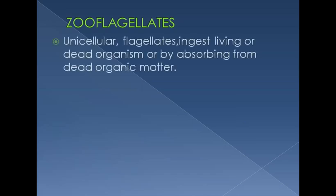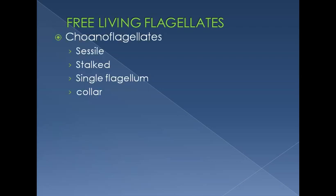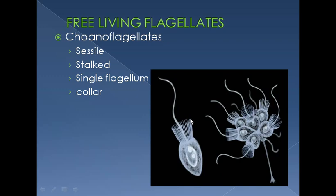Zooflagellates, as the name indicates, are animal-like flagellates. They are unicellular and ingest living or dead organisms through ingestive mode or by absorption from dead organic matter, so both modes are found in zooflagellates. There are three types: free-living, symbionts, and parasites. Free-living flagellates include choanoflagellates — 'choano' means collar, since these have a protoplasmic collar.